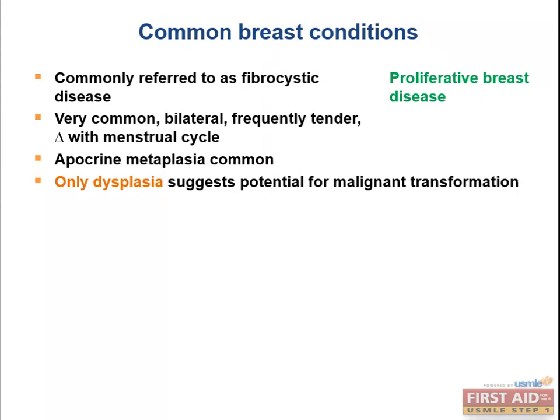They'll try to trick you with hyperplasia because endometrial hyperplasia secondary to unopposed estrogen increases the risk of endometrial cancer. But for fibrocystic disease, it's only dysplasia — which is still reversible, like metaplasia. It's neoplasia that's irreversible. If they mention dysplasia, that's the characteristic with malignant potential. Cellular atypia is synonymous with dysplasia — this is what has malignant potential.